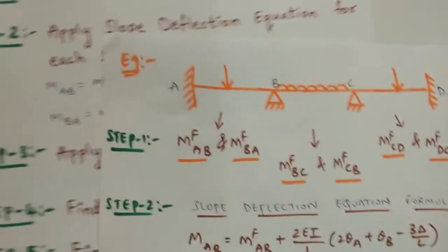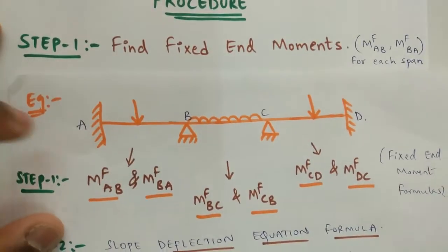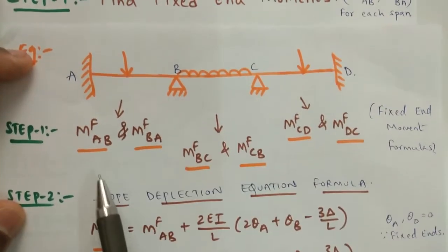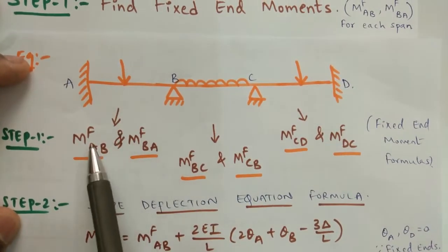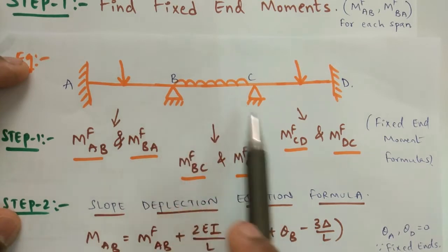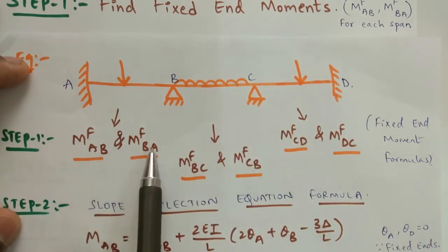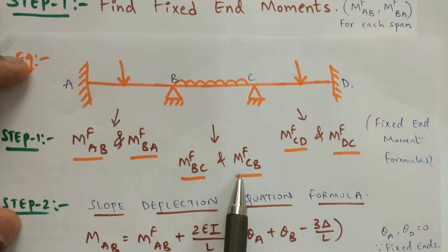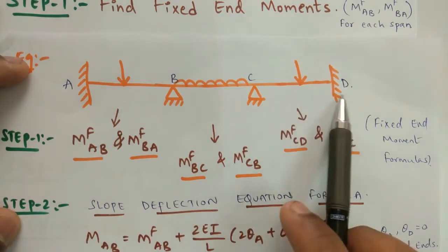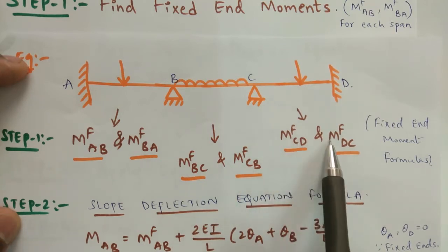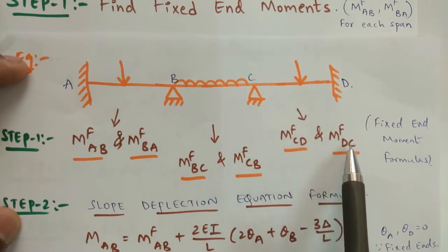Now I will show you one example. In step number 1, you have to find the fixed end moments. For example, if a continuous beam is given, then in step number 1, you have to find out the fixed end moments for each span AB, BC, and CD — that is MFAB and MFBA, MFBC and MFCB, and in span CD, based upon the loading conditions, you apply the fixed end moment formula to find MFCD and MFDC.